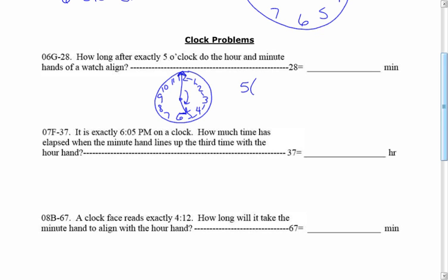Each section is 30 degrees, so five sections gives 150 degrees. Dividing degrees by the relative rate in degrees per minute tells us how many minutes it takes for the hands to meet. For the minute and hour hand, that's 6 minus 0.5 equals 5.5 degrees per minute. So 150 divided by 5.5 gives approximately 27.3 minutes.